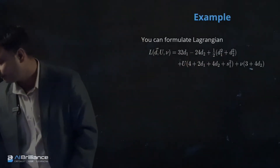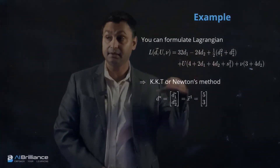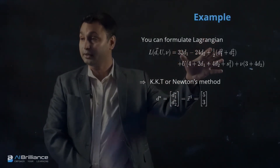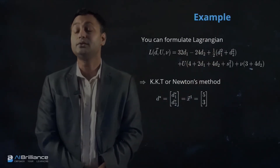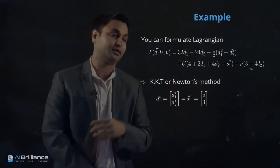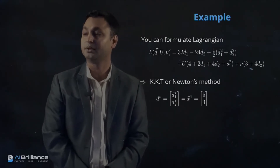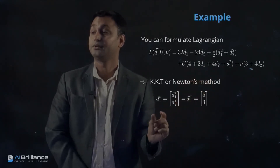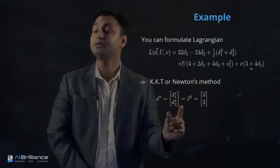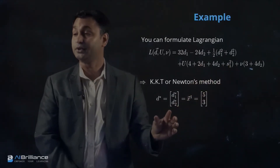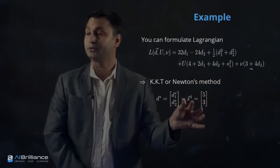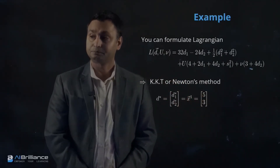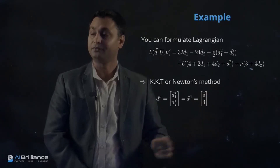We are not forming an augmented Lagrangian here. On the Lagrangian, we apply Newton's method or steepest gradient descent to find the optimal solution D*. Whatever is the optimal solution D* becomes our new X1, moving away from x0. Solving this quadratic program gives D1*=5 and D2*=3, which we assign as X1 = (5, 3), updating from the previous x0 = (4, 2).